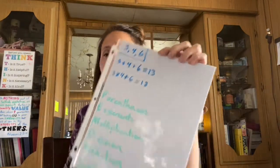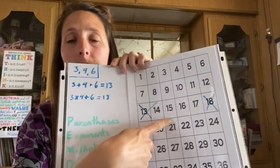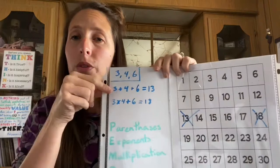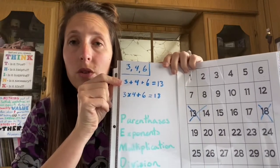Then they're going to play for bingo or blackout on their board. They're going to do this by using all three numbers in math equations. The catch is they have to use the order of operations.